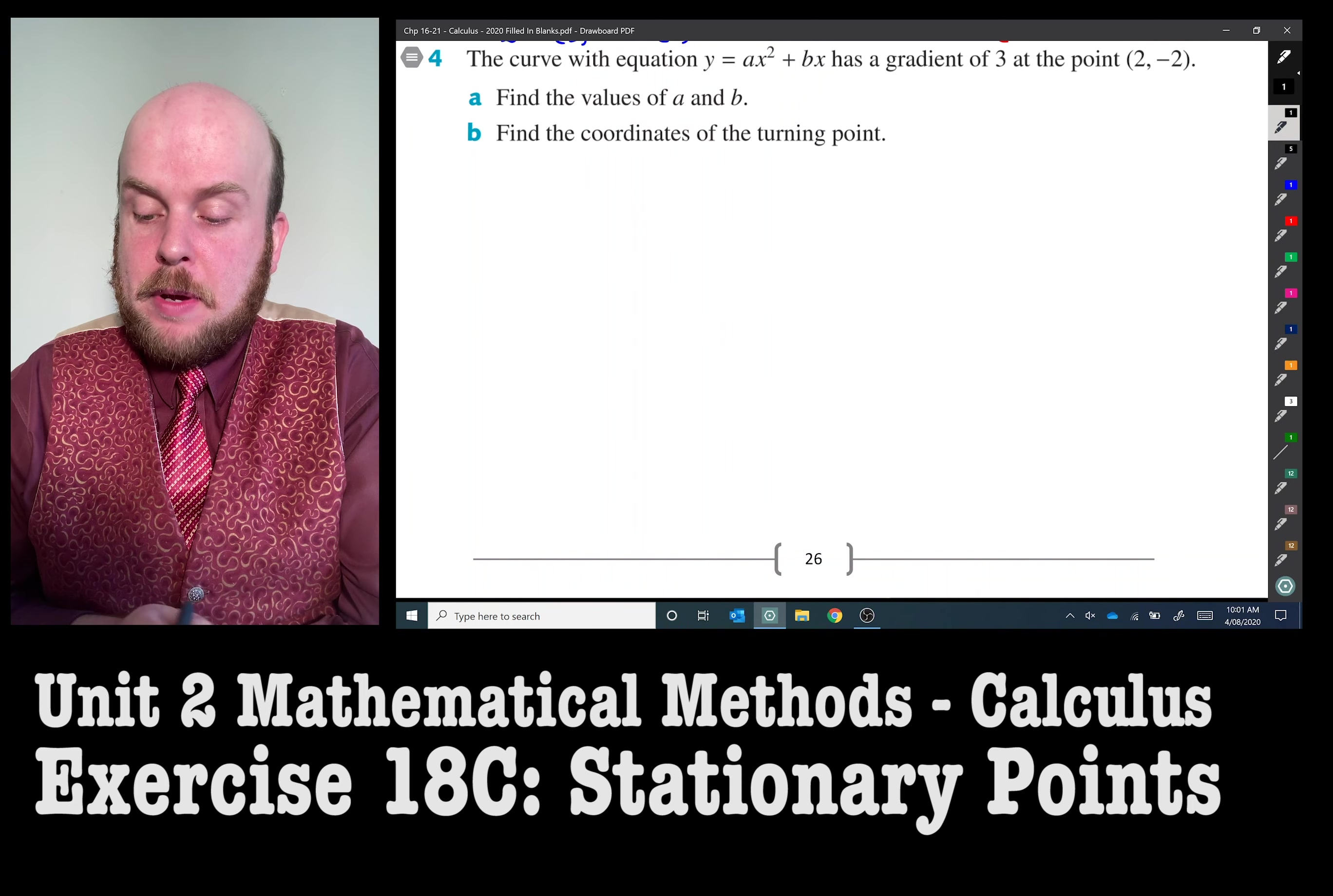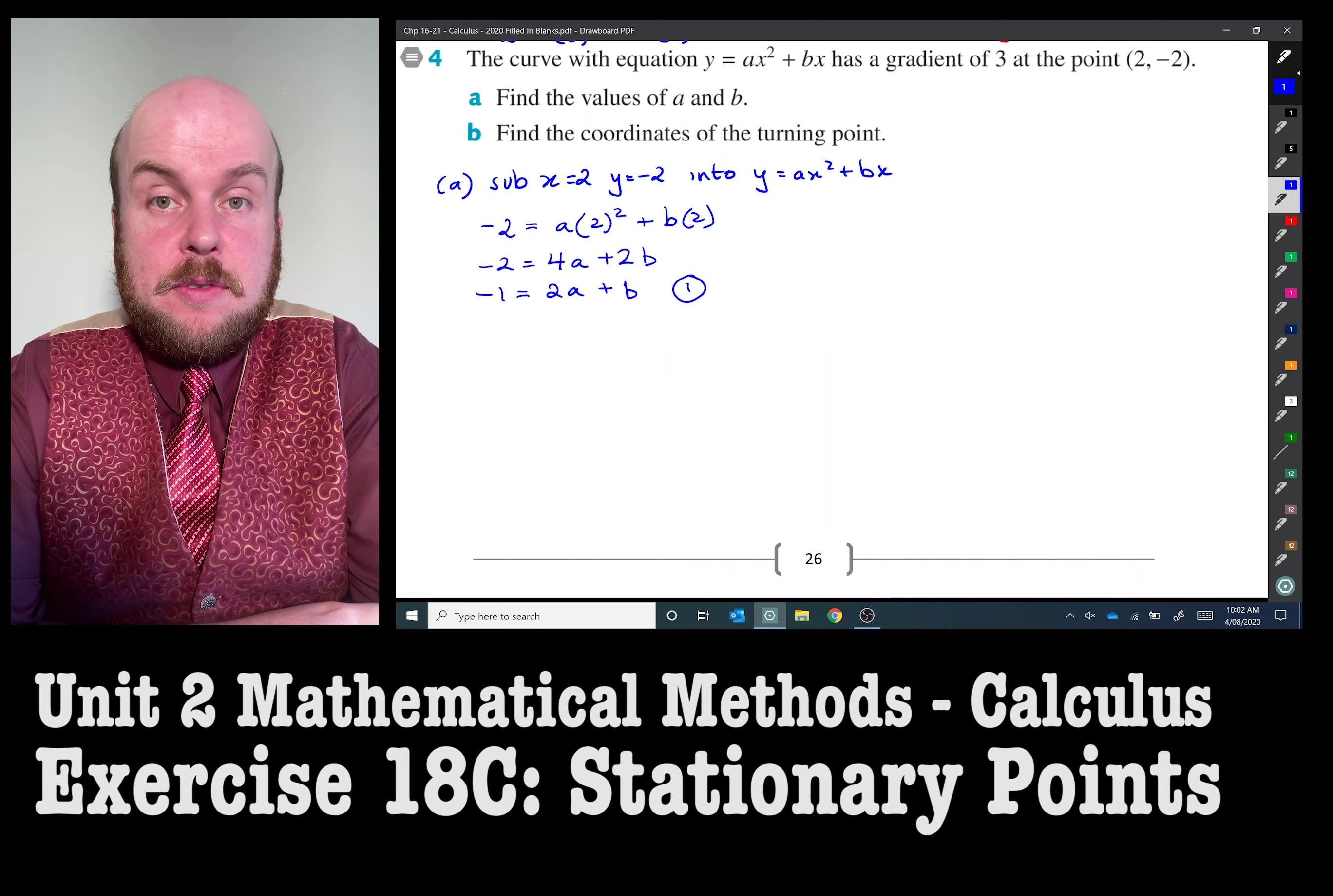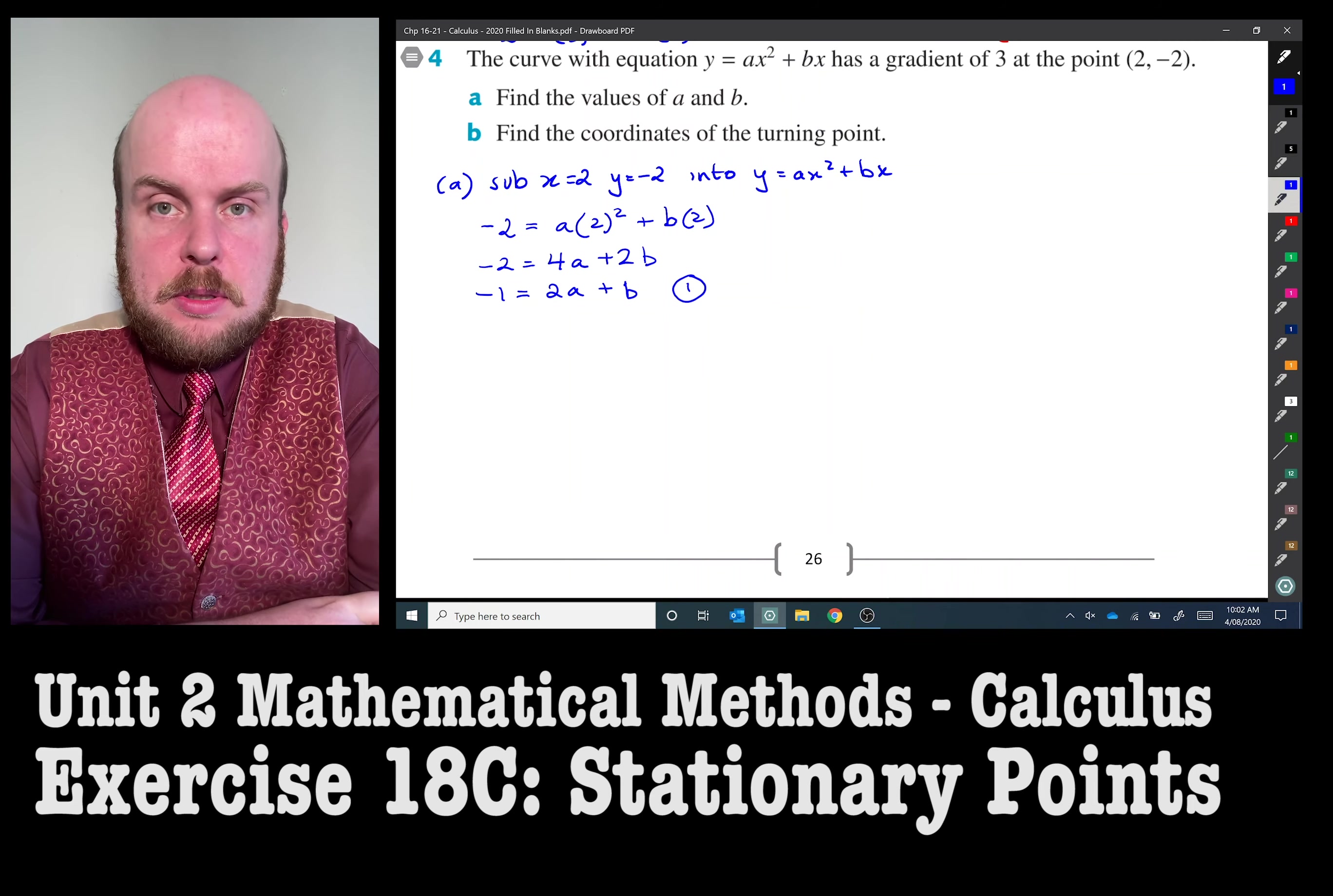So I've substituted the coordinate in there into the original equation just like I normally would with a simultaneous equation and I managed to get this as negative one equals 2a plus b. If you've got negative two equals 4a plus 2b that's still fine. I've just divided each by a common factor of two just to make the addition and multiplication simpler.